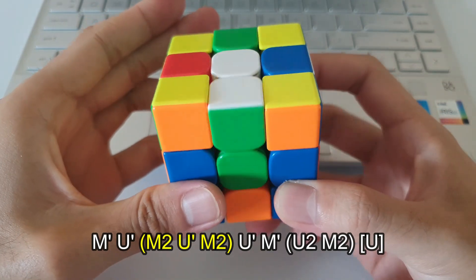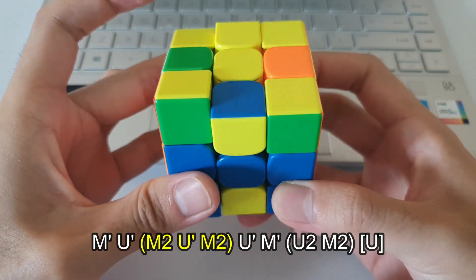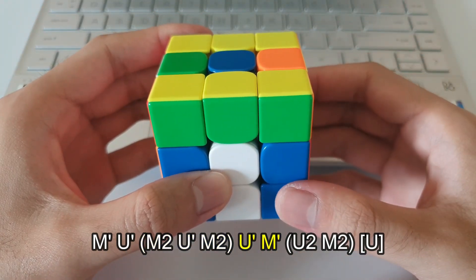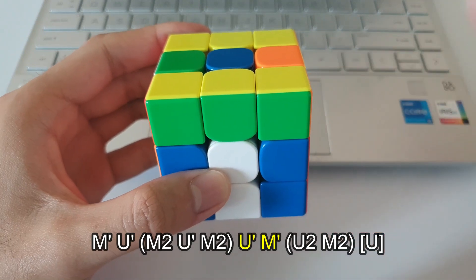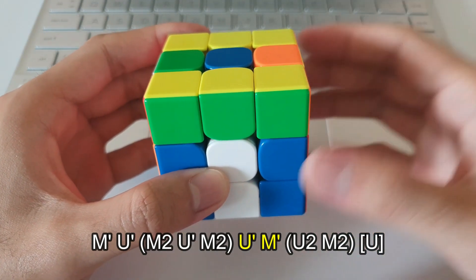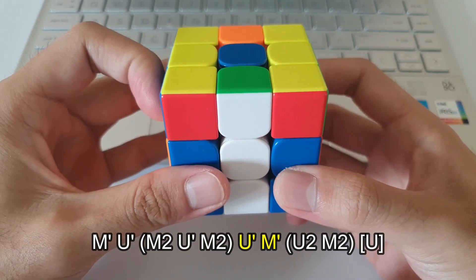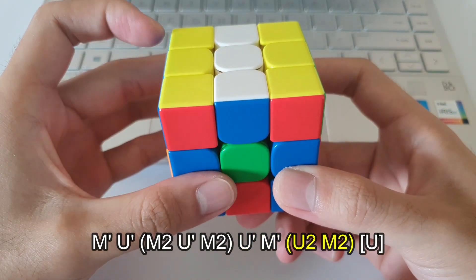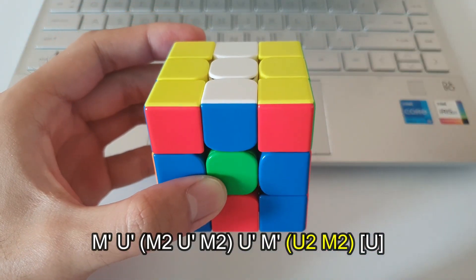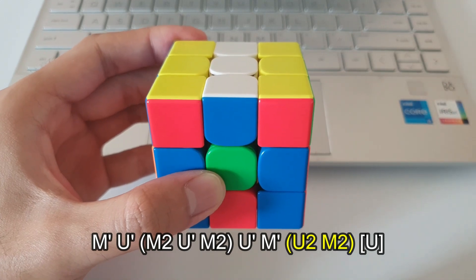Now you'll have to just remember that in the middle, there's an M2, U prime, M2. And now there's another U prime followed by M prime. Similar to the first two moves, just the other way around, U prime followed by M prime.